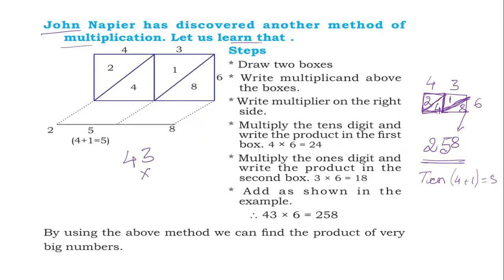Now let's verify with the actual standard multiplication: 6 times 3 is 18, write 8 and carry 1. Then 6 times 4 is 24, plus the carry 1 equals 25. So the answer is 258 — both methods give the same result. This method is also easy and very interesting to learn.